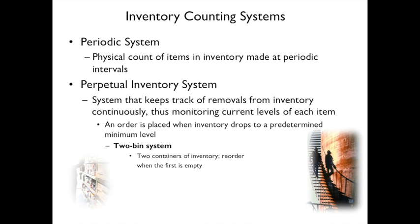There's also a concept where you don't have to count, which is a two-bin system. You have two containers of inventory, and when the first one is empty, you reorder. For example, I use the two-bin system for shampoo — I have one shampoo in the shower being used, and a second one in the medicine cabinet that's brand new.